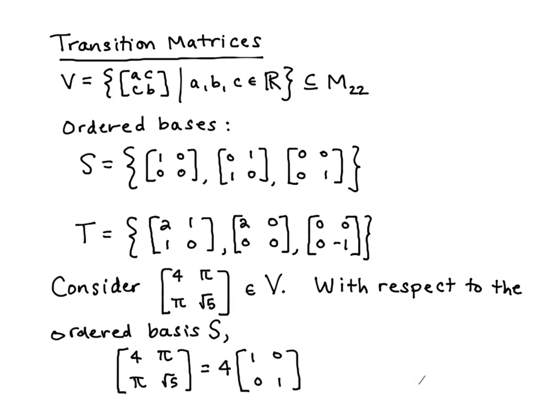So we do this. We see that it's 4 times the first one, plus pi times the second one, plus square root of 5 times the third one. I noticed that I have a typo here in the first matrix. This should be a 0, okay? So let's pretend that that was a 0 the whole time. Sorry about that. As you know, I make lots of arithmetic errors.